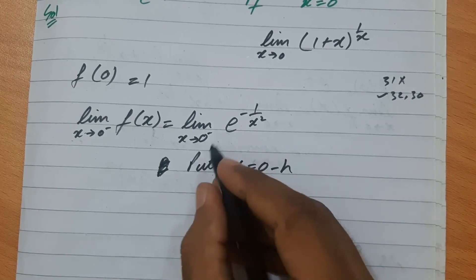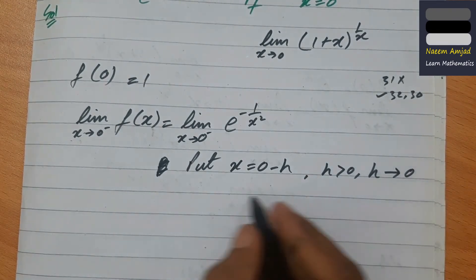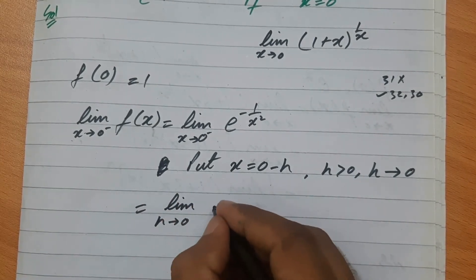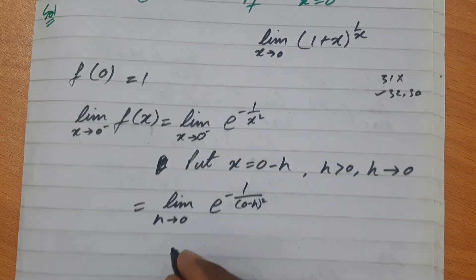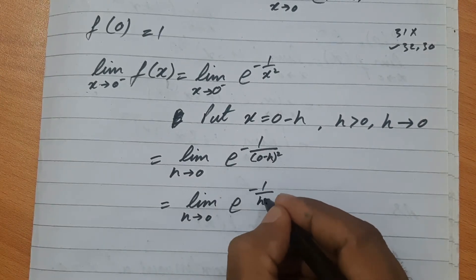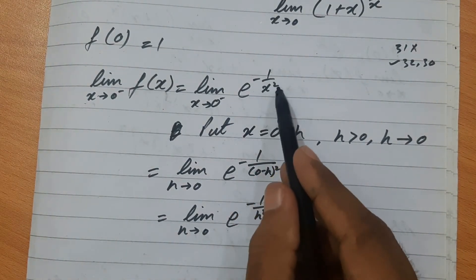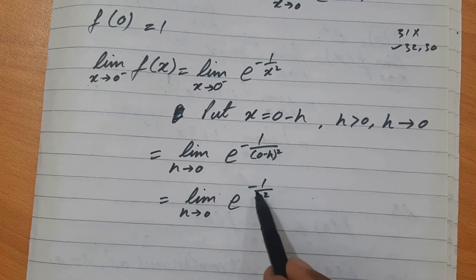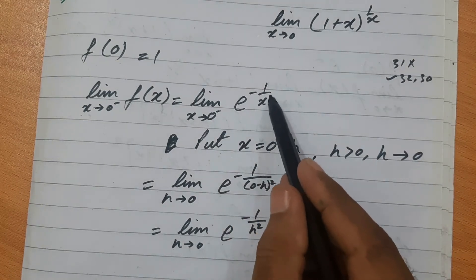Substitution method use करते हैं: put x = 0−h, where h > 0 and h→0। x की जगह (0−h) आएगा: e^(−1/(0−h)²) = e^(−1/h²)। limit h→0 e^(−1/h²)। यहाँ −1/x² था, वहाँ −1/h² है। Right limit में भी 0+h put करने पर −1/h² ही आएगा।